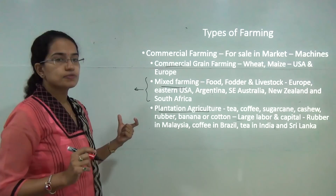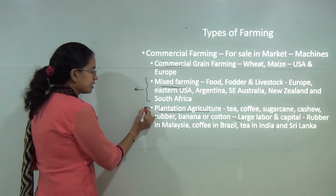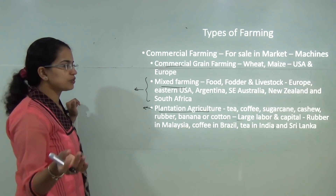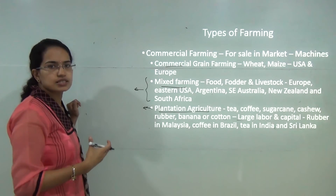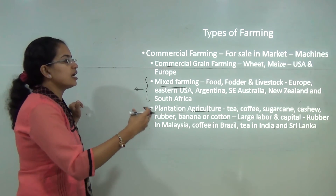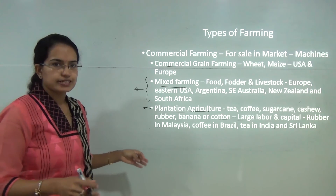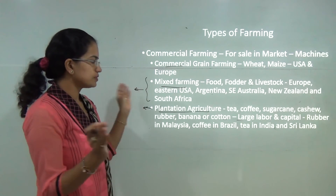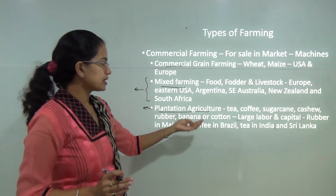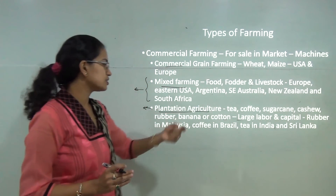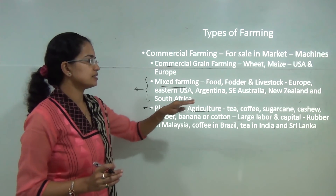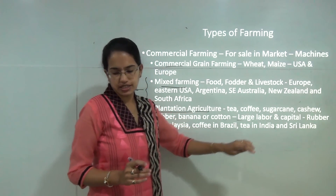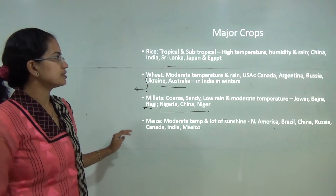Plantation cultivation is the cultivation of specific crops requiring large amounts of capital and labor. It was introduced by the British throughout the globe — for example, rubber plantations in Kerala and tea plantations in the Northeast hills of India. The common plantation crops are tea, coffee, sugarcane, cashew nuts, rubber, banana, and cotton. Examples include rubber plantations in Malaysia, coffee plantations in Brazil, and tea plantations in India and Sri Lanka.